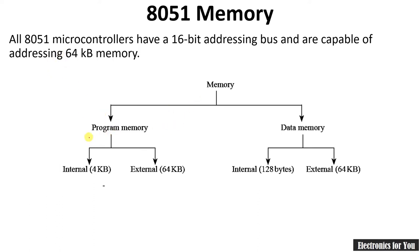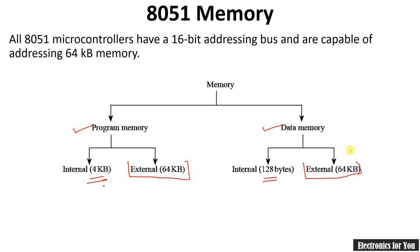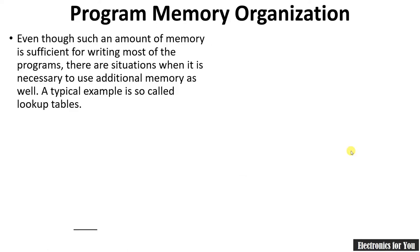The 8051 has two different memories: program memory and data memory. Internal memory is generally considered 4 KB, and data memory is 128 or 256 bytes. External memory in both cases — ROM or RAM — is 64 KB, because we have 16 address lines. Now let's see the program memory organization.